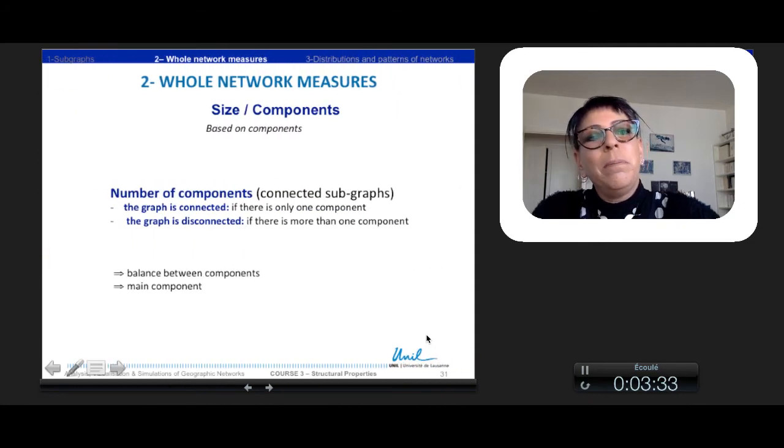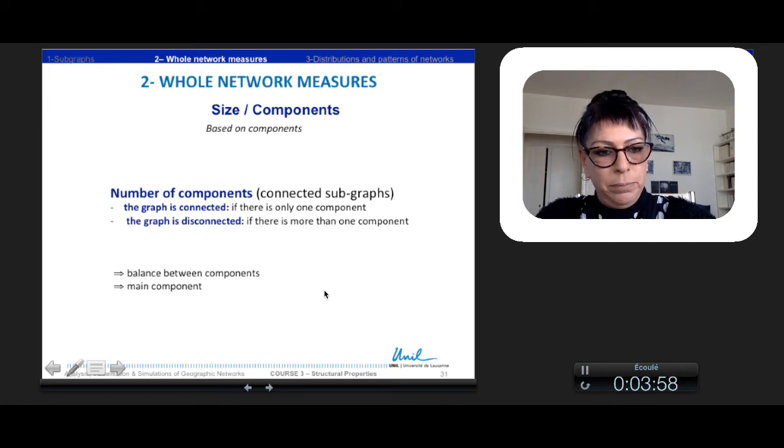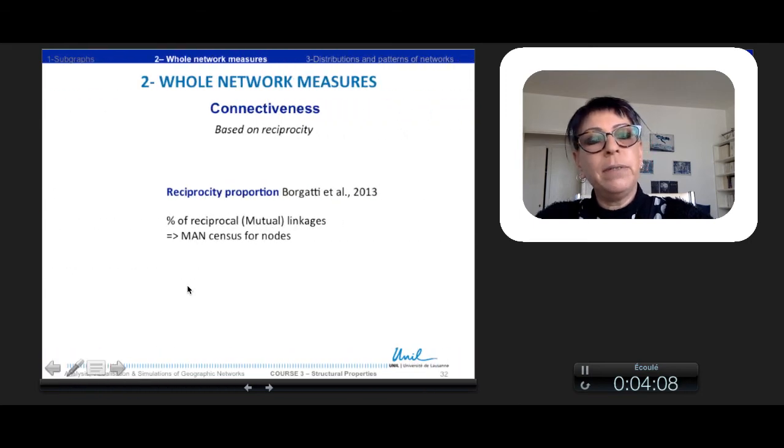We can also measure the size of a network according to its number of components. So it is connected subgraph. So the graph is entirely connected, it varies only one component. The graph is absolutely disconnected, it varies more than one component. So we can also watch to the balance between components. We can watch to the main components. Another measure is the reciprocity and the reciprocity proportion, the percentage of reciprocal or mutual linkages. We can make the mutual main sensors for nodes.